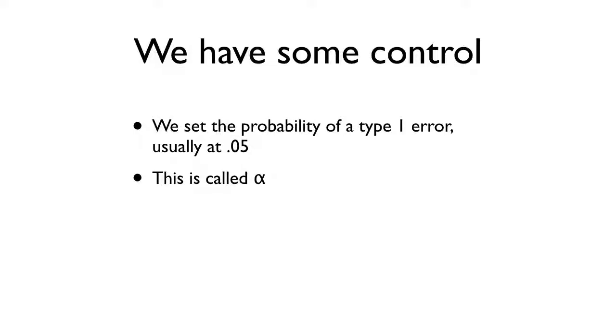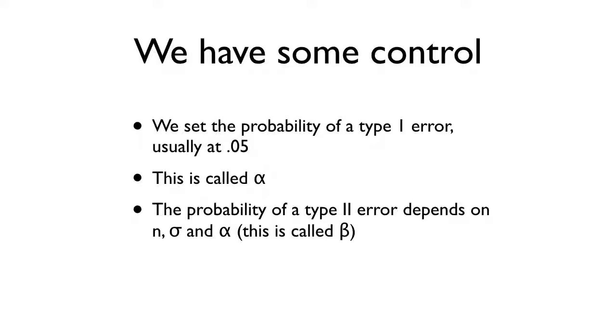So the probability of a type 2 error, and this is called beta, this is the probability that H-A is true but we fail to reject H0. It depends on a lot of things. It depends on the number of observations. It depends on the variance or the standard deviation in the population which we don't know. And it depends on alpha. Because if we make alpha really small, like .0000001, we're not going to have a lot of false positives.